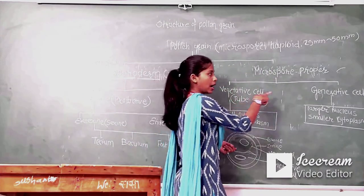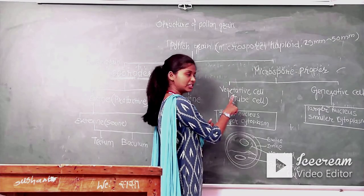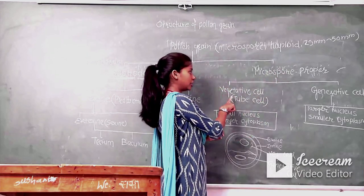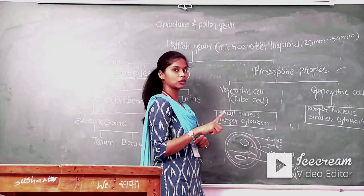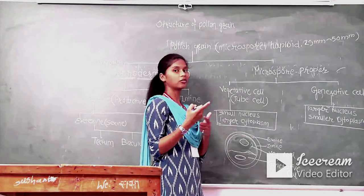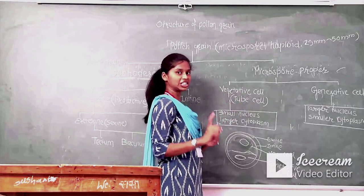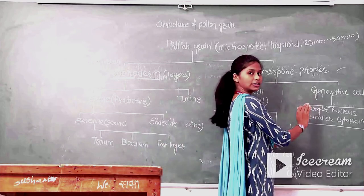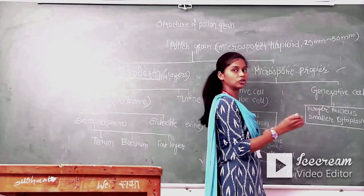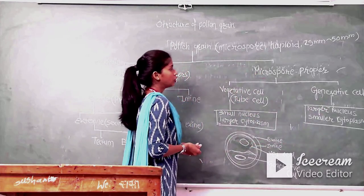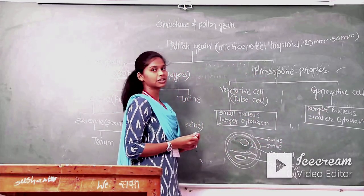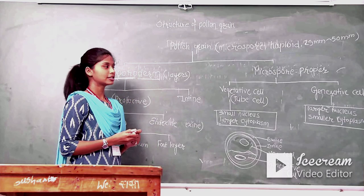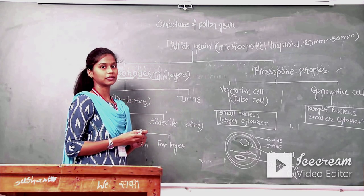The vegetative cell and generative cell together form the microspore proper. The vegetative cell is also known as tube cell because it produces the pollen tube. In further development, the vegetative cell will degenerate and the generative cell will go further, generating new plants and new progeny. In this lecture, we have seen the detailed structure of pollen grain. I hope you have understood. We will see the next topic in the next lecture. Thanks for learning.